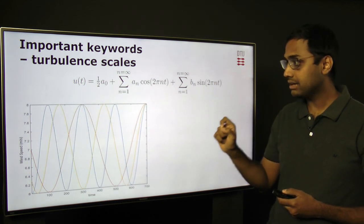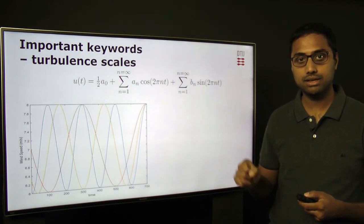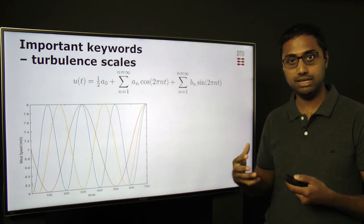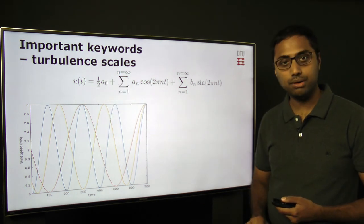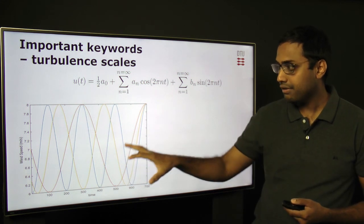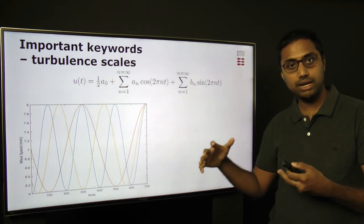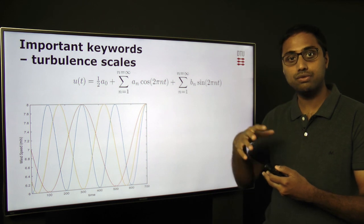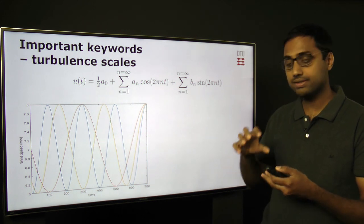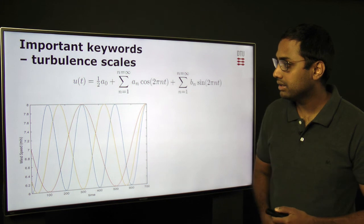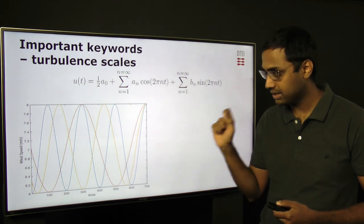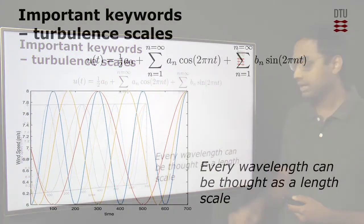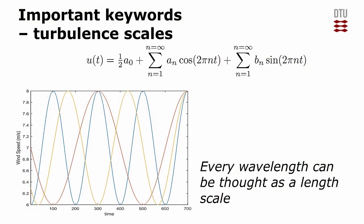Now when we decompose this random time series using a concept called Fourier series, then we simply get the mean component out, and the whole fluctuating time series can be decomposed into waves with a certain frequency and wavelength. For example, here are three waves shown with a particular frequency and wavelength. And every wavelength can be thought as a length scale or the inverse of it.